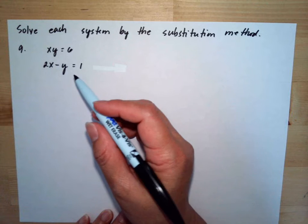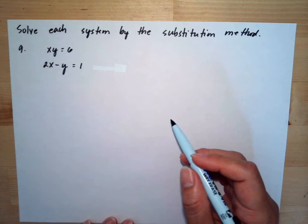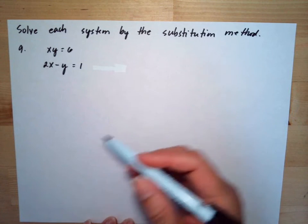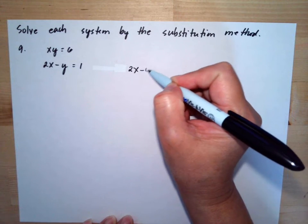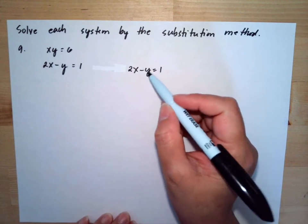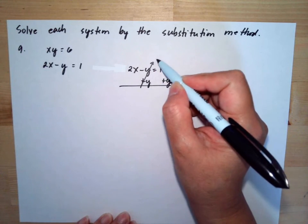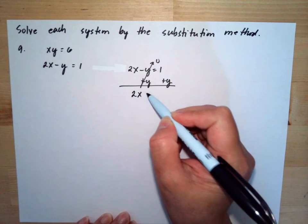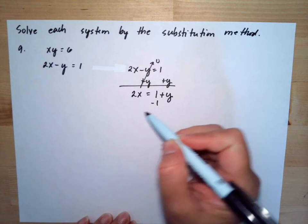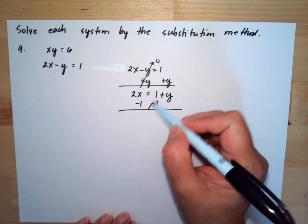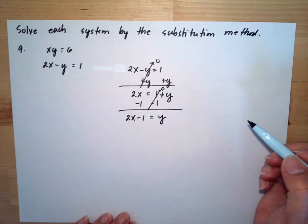Here we can see the easiest equation to work with is the second one. We can easily separate the y, so I will start with that. We have 2x minus y is equal to 1. If I add y to both sides, I get 2x is equal to 1 plus y. Then subtracting 1 from both sides gives y is equal to 2x minus 1. So now y is separated.